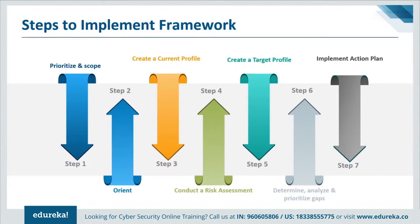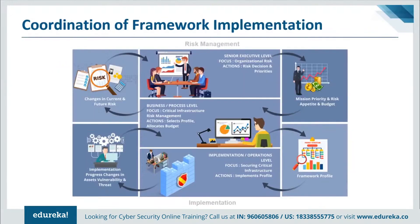The last step is to implement the action plan. The organization determines which actions to take to address the gaps identified in the previous step and adjusts its current cybersecurity practices to achieve the target profile. The framework identifies examples of informative references regarding the categories and subcategories, but organizations should determine which standards, guidelines, and practices work best for their needs. An organization repeats these steps as needed to continuously assess and improve its cybersecurity, and may also use this process to align their cybersecurity program with their desired framework implementation tier.